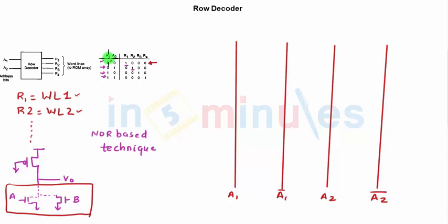Here is how it will look: A1 bar will go as input to this gate. It's an OR, so this is grounded, and the other input is A2 bar. I have grounded the two transistors and given them the two inputs.